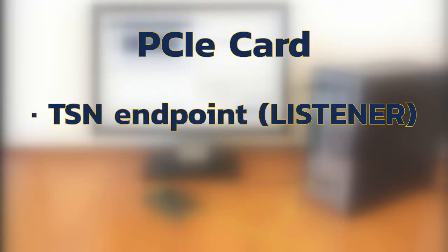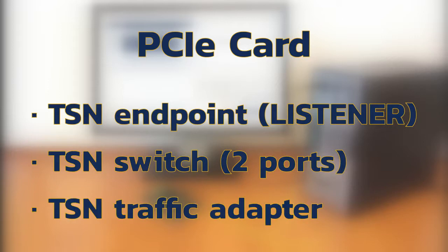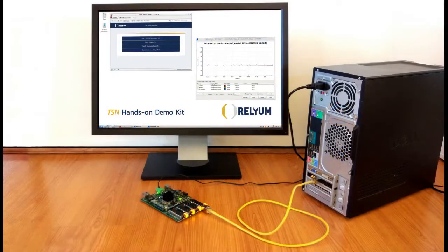The TSN PCIe card and its host PC will act as listeners. The TSN endpoint is also in this case connected to a switch with two external ports. In order to transform ordinary traffic coming from the host to TSN traffic, there is an adapter before entering the switch. The evaluation board and PCIe card have to be connected between them as shown in the image to properly run the demo.